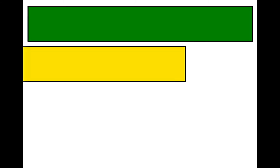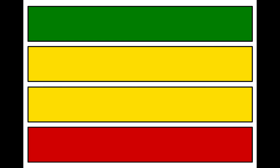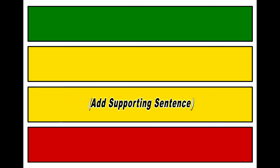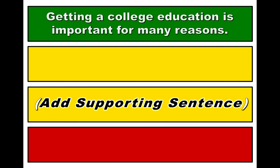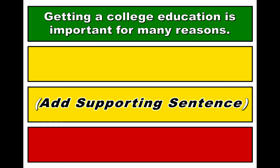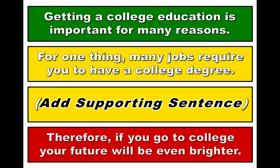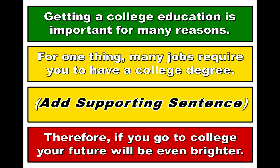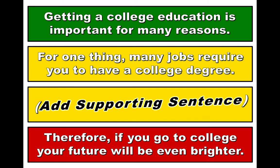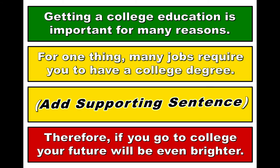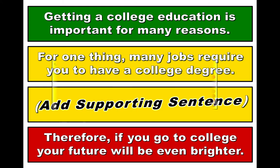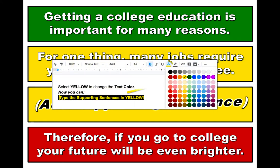For this assignment, you will be adding the supporting sentences using your Google Doc. The topic sentence is: Getting a college education is important for many reasons. A supporting sentence is: For one thing, many jobs require you to have a college degree. The ending sentence is: Therefore, if you go to college, your future will be even brighter. Add a supporting sentence that provides more details based on the topic sentence. Don't forget to change the text color to yellow to type your supporting sentence.